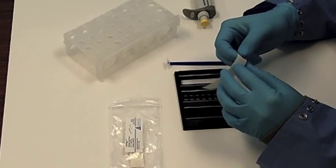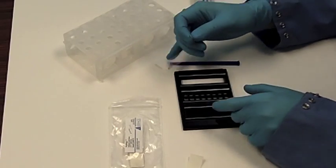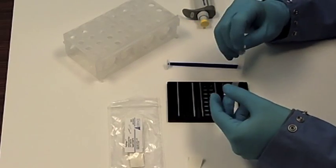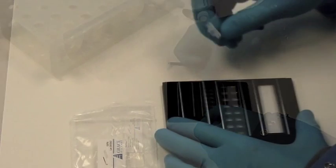Prior to hybridization, seal strips are used to ensure segregation between chambers. Seal strips are applied to the chamber assembly. The non-adhesive backing is removed and seal strips are placed over the top of the chambers.